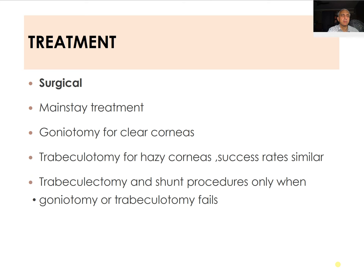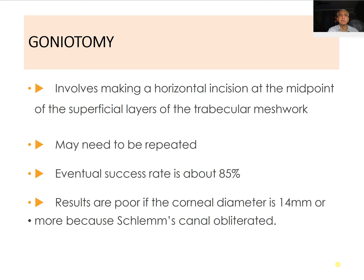The treatment options include surgical treatment, which is the mainstay. Goniotomy is used for clear corneas, trabeculotomy for hazy corneas, with similar success rates. Trabeculectomy and shunt procedures or valves are used only when goniotomy or trabeculotomy fails. Medical treatment is only used as supportive treatment until surgical treatment can be performed. Goniotomy involves making a horizontal incision at the midpoint of the superficial layers of the trabecular meshwork; it may need to be repeated and has an eventual success rate of about 85%.